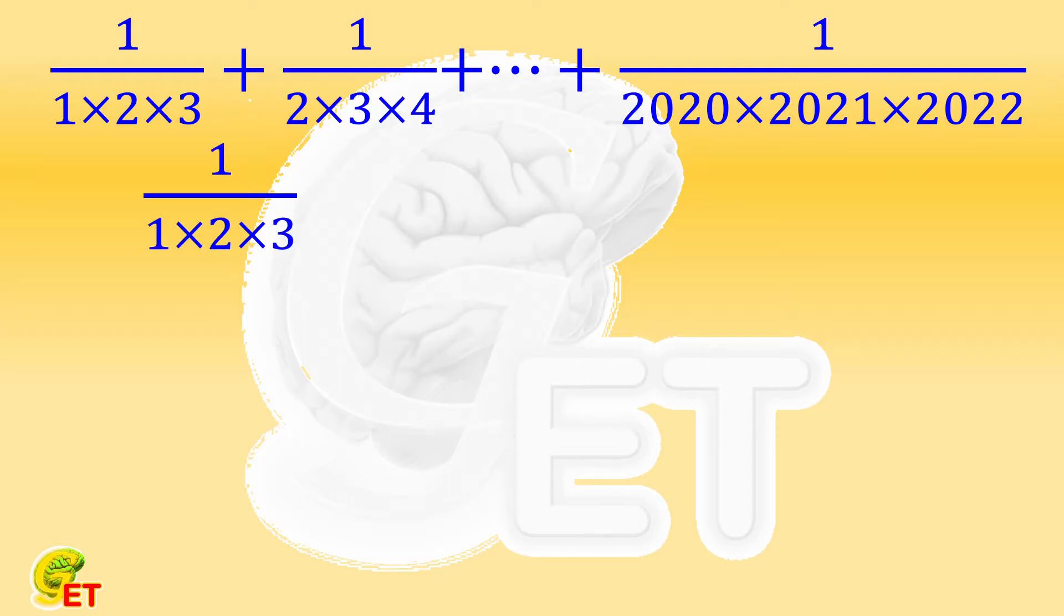The first term, 1 over 1 times 2 times 3, equals to 1 over 1 times 2, multiplies 1 third. Remember what we just talked about regarding the classical question, this equals to the difference between 1 over 1 and 1 over 2, multiplies 1 third.